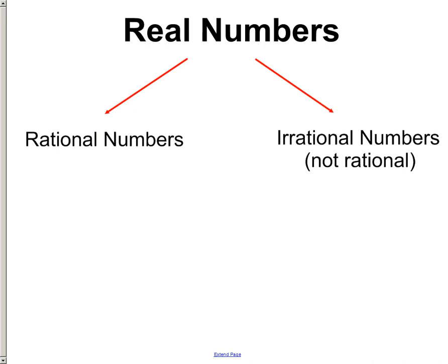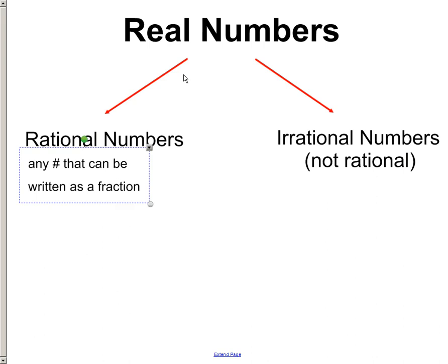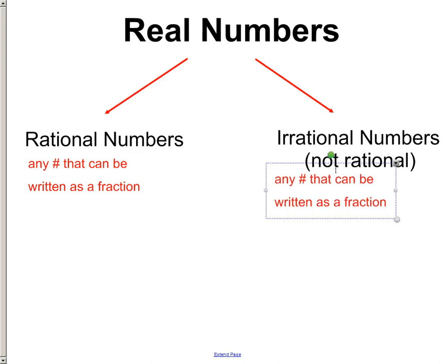So if we wanted to go through, we could list all these different examples over here on the left side for rational numbers and several different examples on the irrational numbers, but let's just see if we can find the easiest way to describe it. Any number that can be written as a fraction is what rational numbers are. And then irrational numbers, they're any number that cannot be written as a fraction. So that's the main difference.